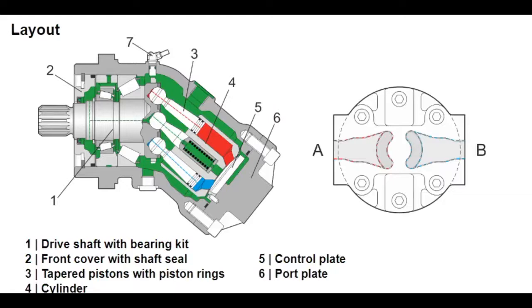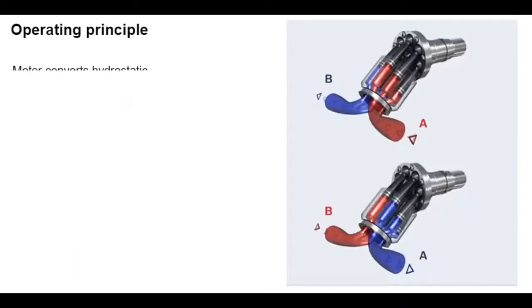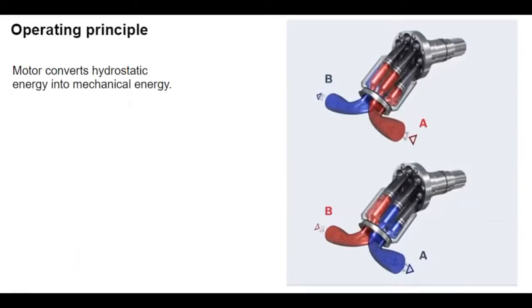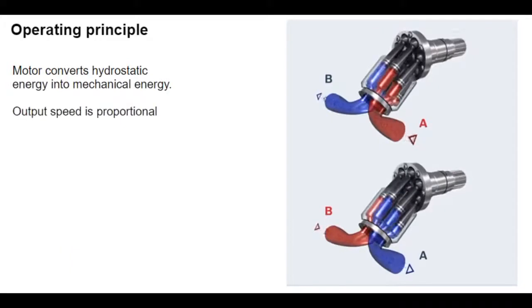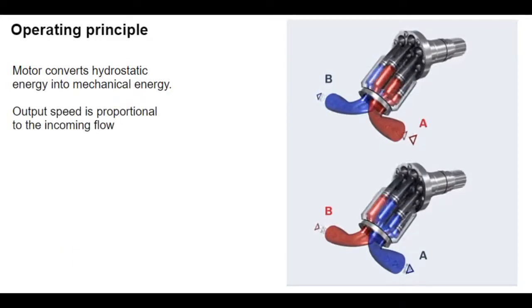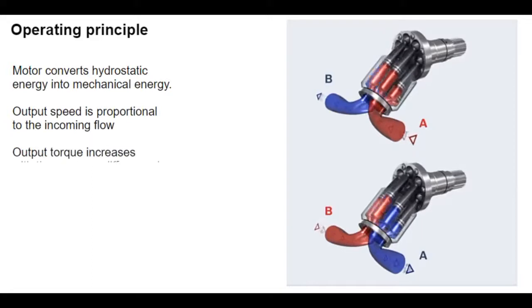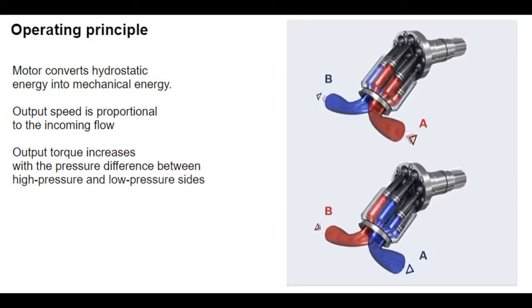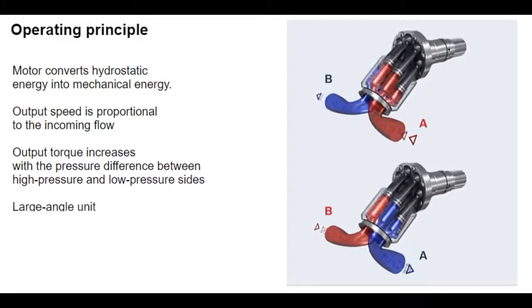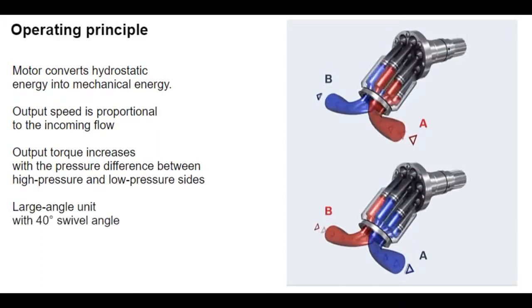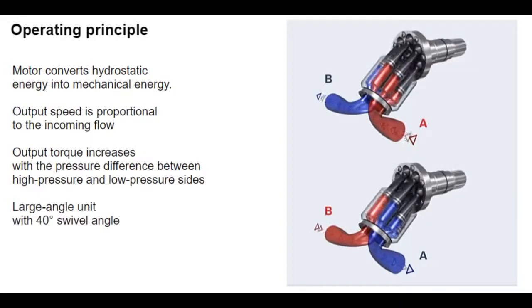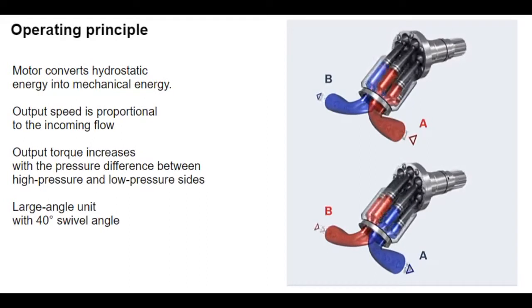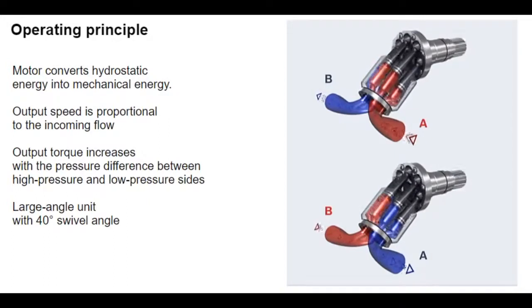The hydraulic motor can also be equipped with a speed sensor as an option. The cylinder bores are supplied with hydraulic fluid through the port plate and control plate. The pistons in the cylinder bores extend, which is converted into rotation at the driveshaft flange. The pistons also catch the cylinder and generate output torque at the driveshaft. Output torque grows with the pressure difference between the high-pressure and low-pressure sides. The output speed is proportional to the inward flow and inversely proportional to the displacement of the hydraulic motor.